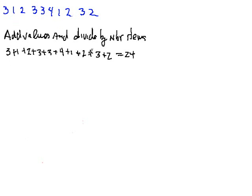OK, and how many items did we have? Well, we had 10 items. So the average is going to be 24 divided by 10, which is 2.4.